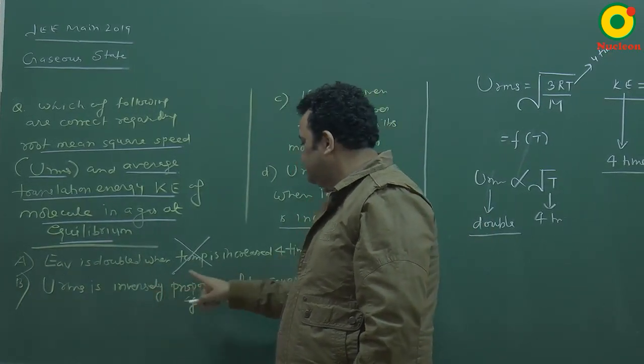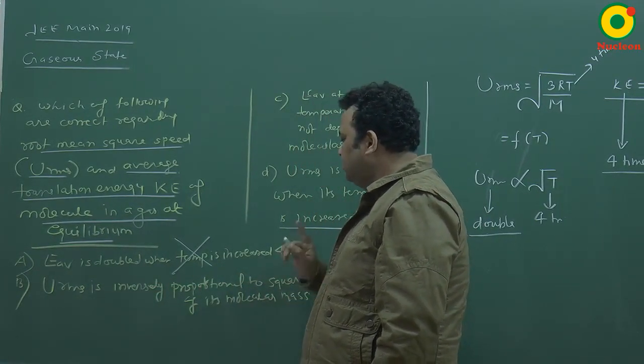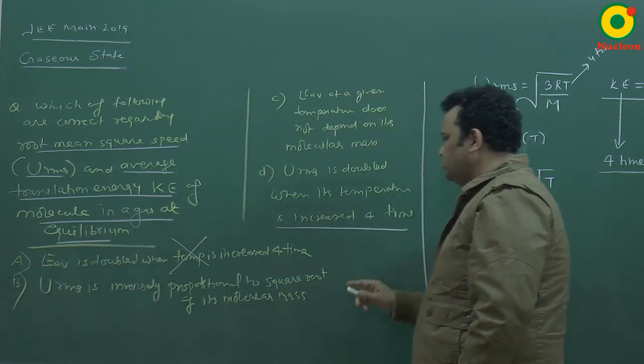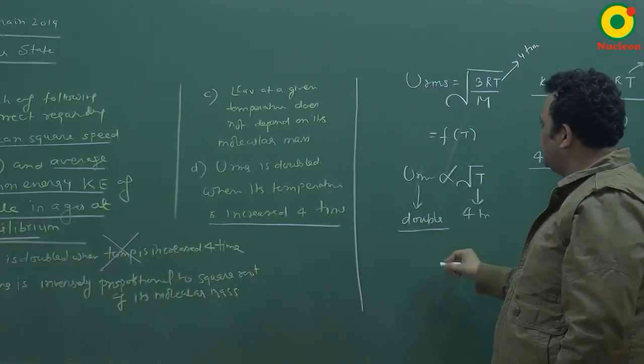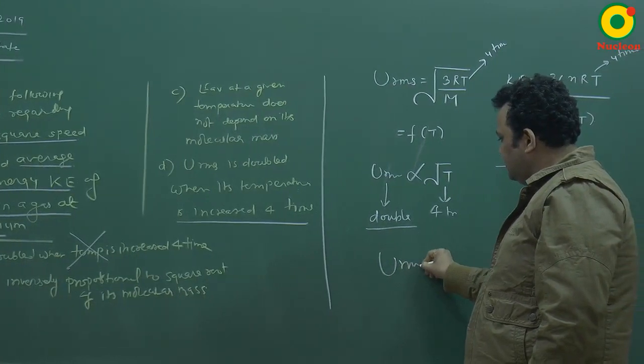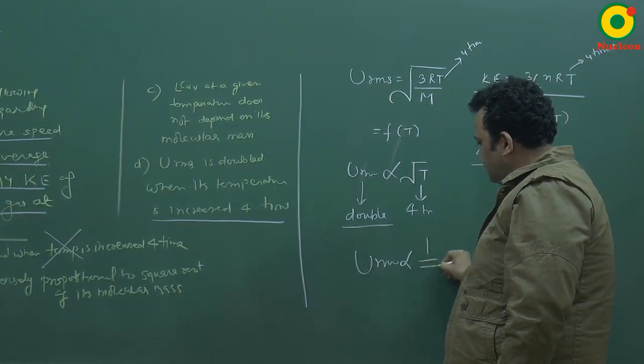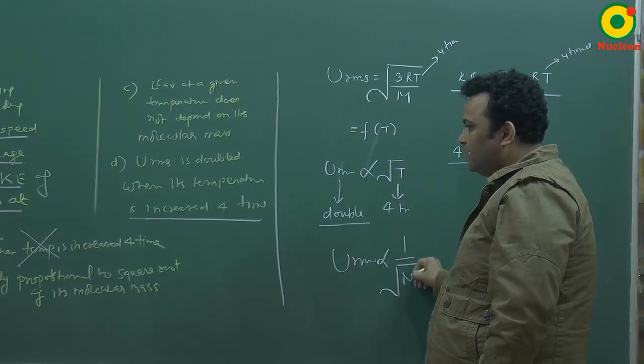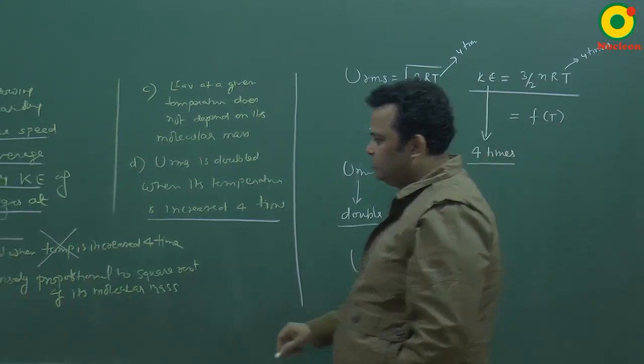URMS is inversely proportional to square root of molecular mass. So you can see that URMS is proportional to 1 upon root M, square root of molecular mass. So this is right.